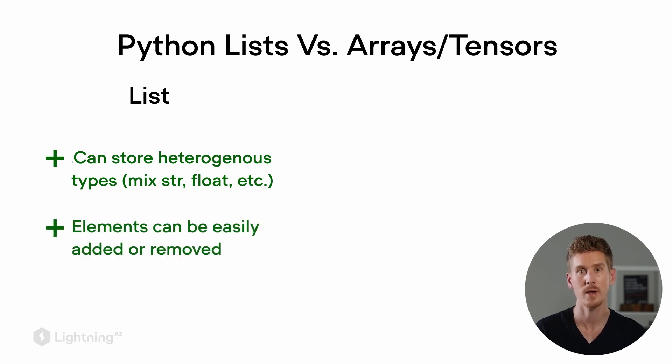When you have a Python list, you can also easily remove or add items using .append or .pop. So while lists are very easy to use and flexible, lists are very slow though when it comes to numerical computations, which is the main motivation behind using arrays or tensors.